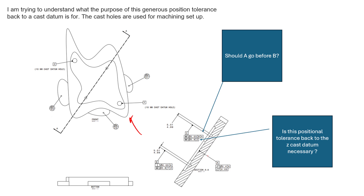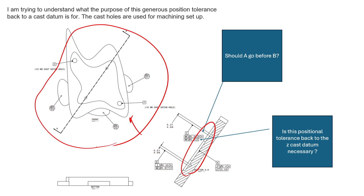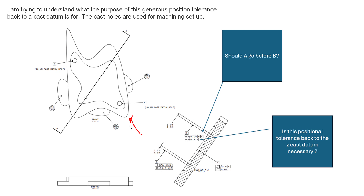So what we end up having to do is create a datum structure link between the datum structure created by the machined features and the datum structure defined by the cast surfaces. We want some relationship between these two worlds. Here we have datum A, B, and C being identified using the machined features, but we also see a tie between those machined features back to the cast surfaces — and that's perfectly legal.